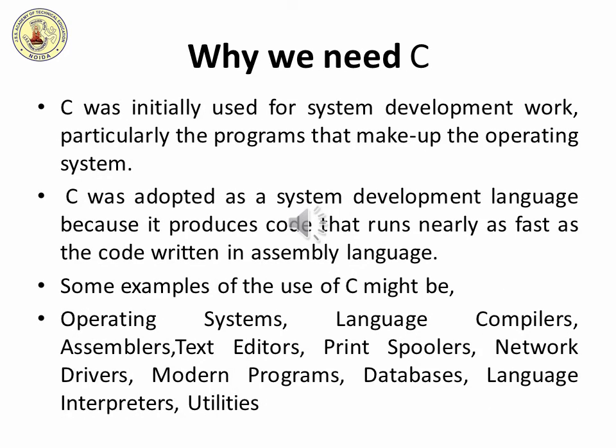Now the question arises: why do we need or use C programming language? C was initially used for system development work, particularly the programs that make up the operating system. C was adopted as a system development language because it produces code that runs nearly as fast as code written in assembly language.